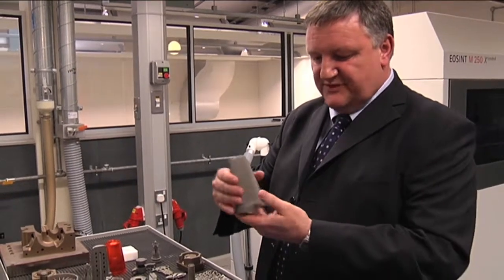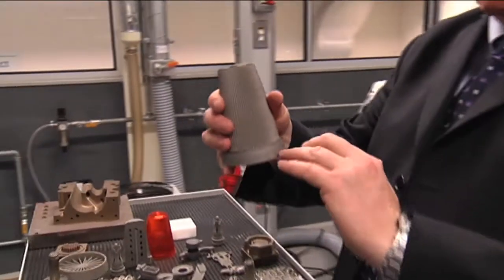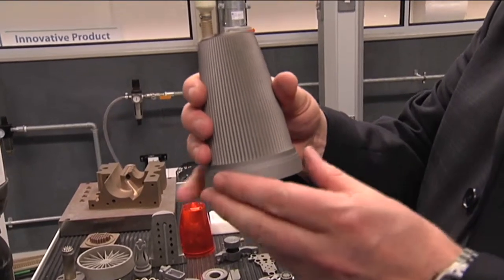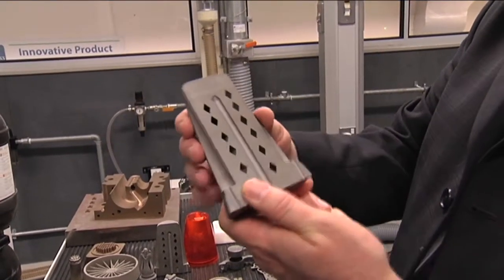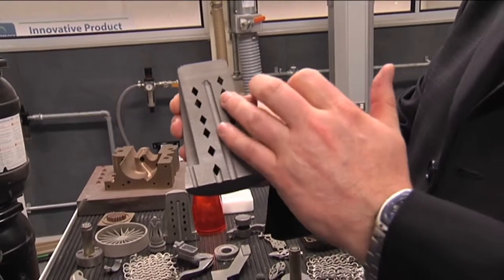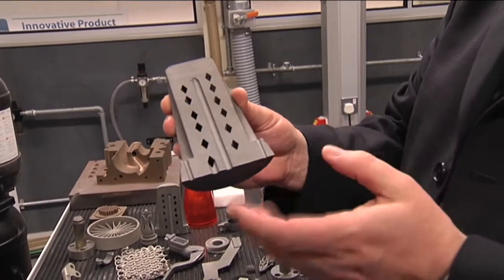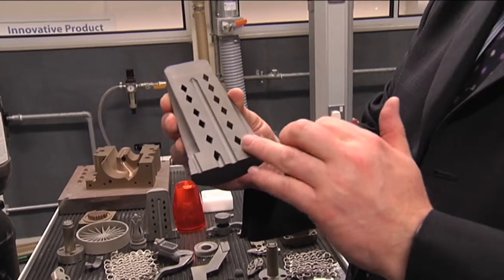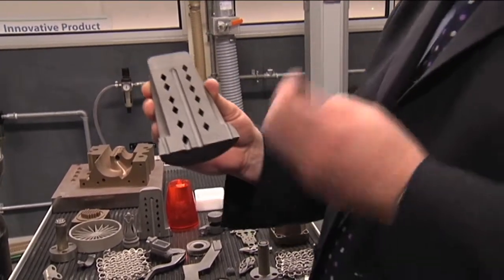Making this with additive layer manufacturing technologies enables you to make these spline surfaces very easily and also enable you to make the cooling circuits within the process which would normally be made by drilling. This enables us to get the cooling a lot closer to the surface, reduce the cycle time.